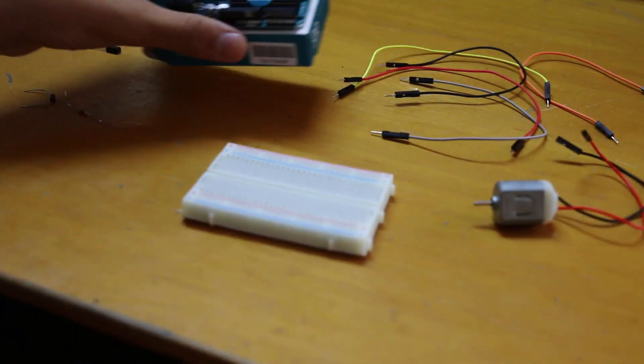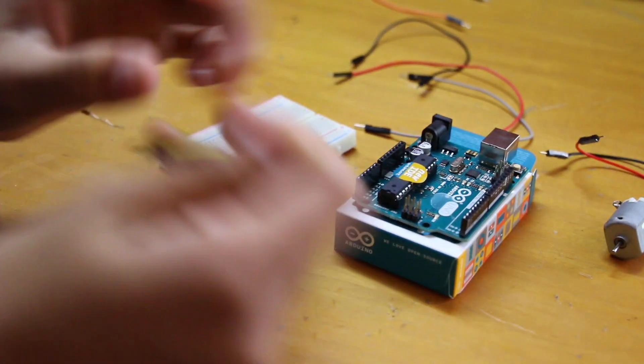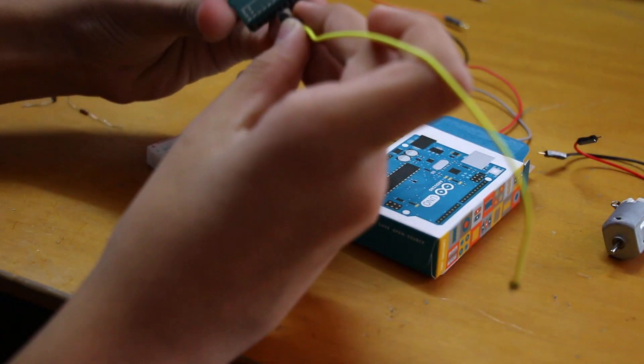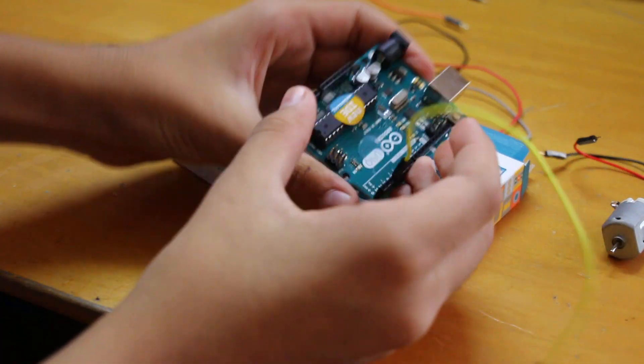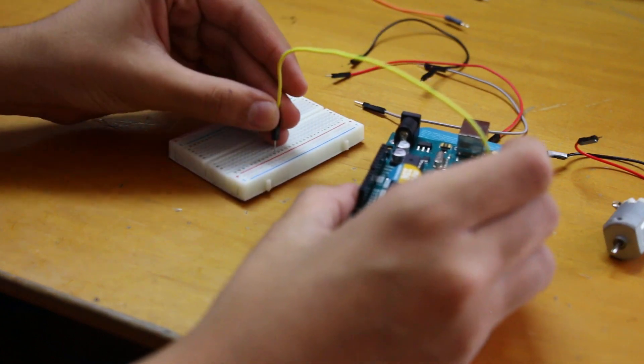So first let's start building the circuit. The first thing we're going to do, we're going to grab a wire, put it into the output pin number three, which is an analog pin on the Arduino over here. Now we're going to plug it in onto the breadboard.